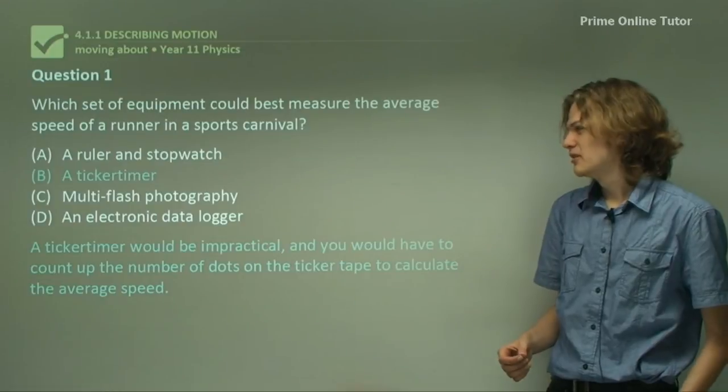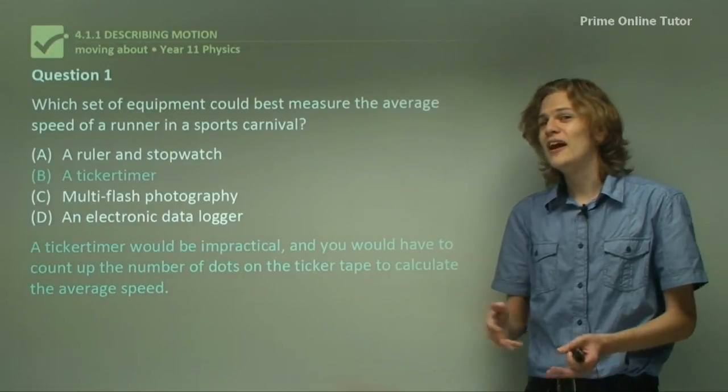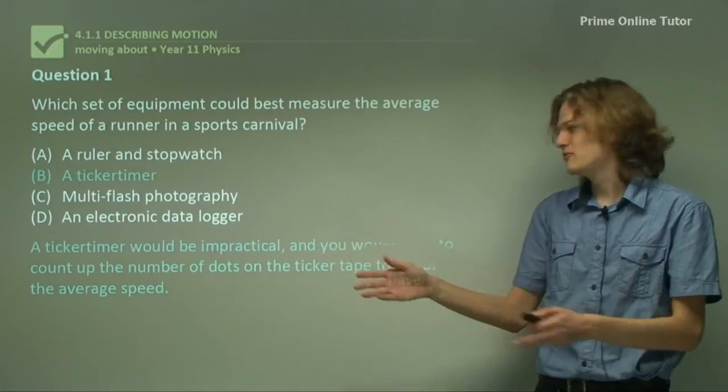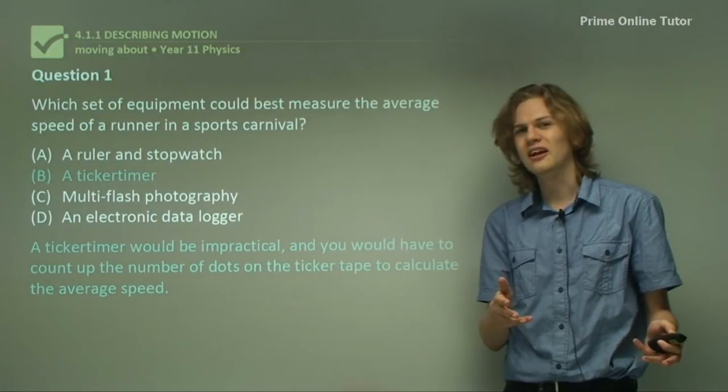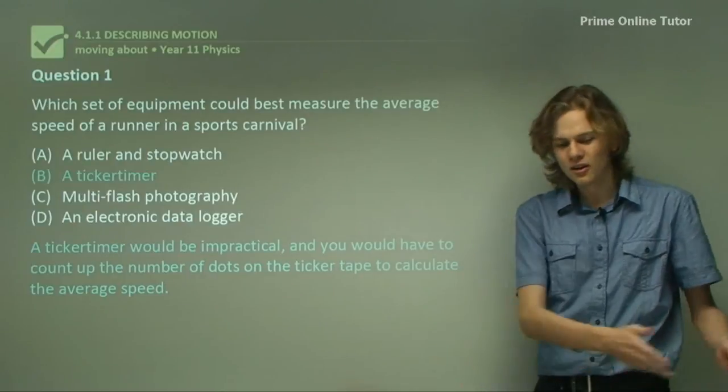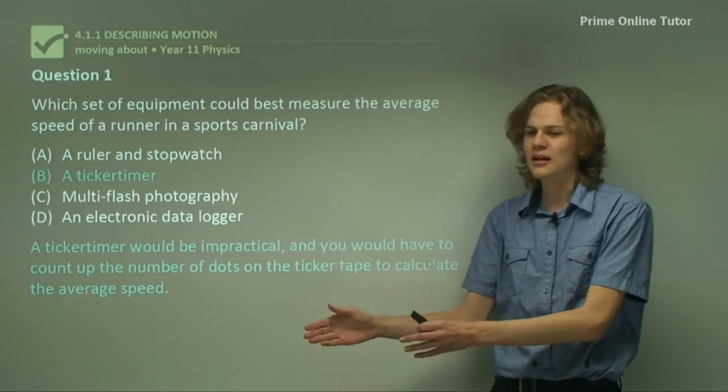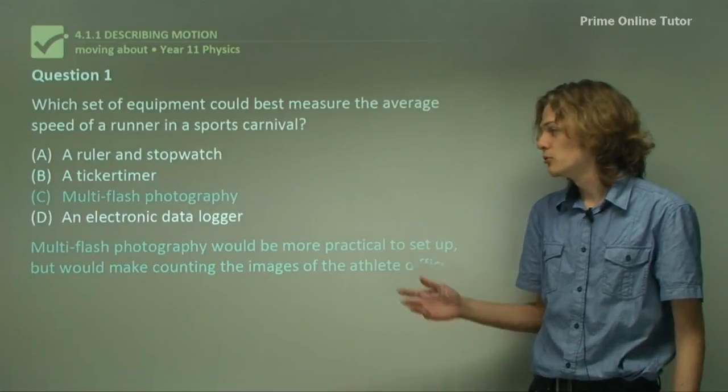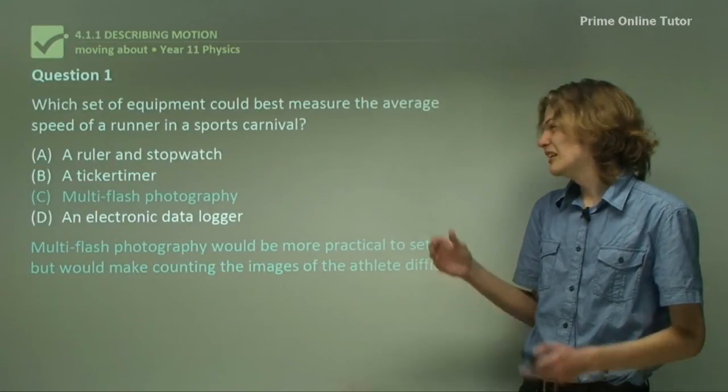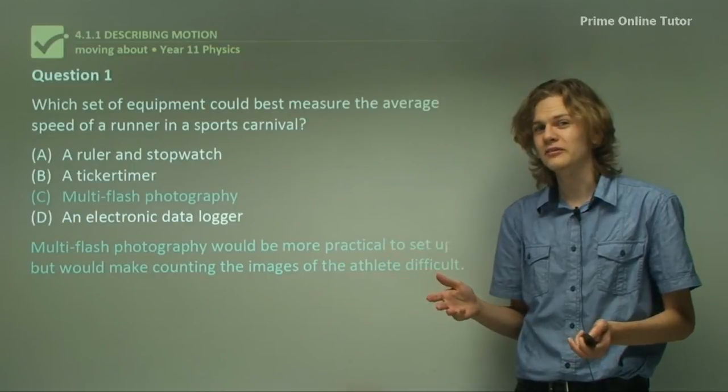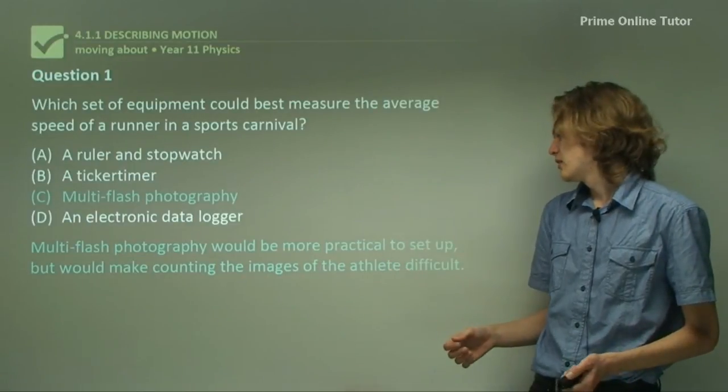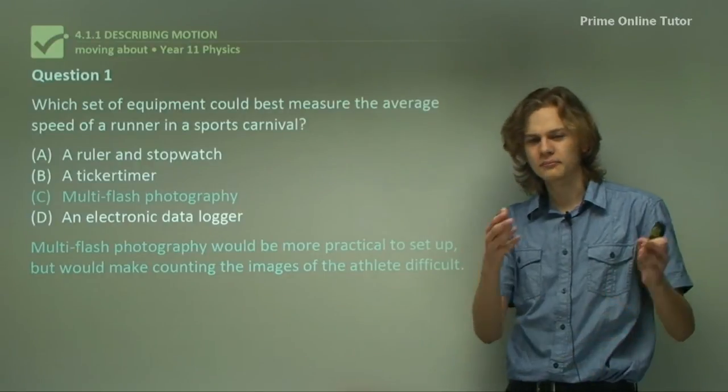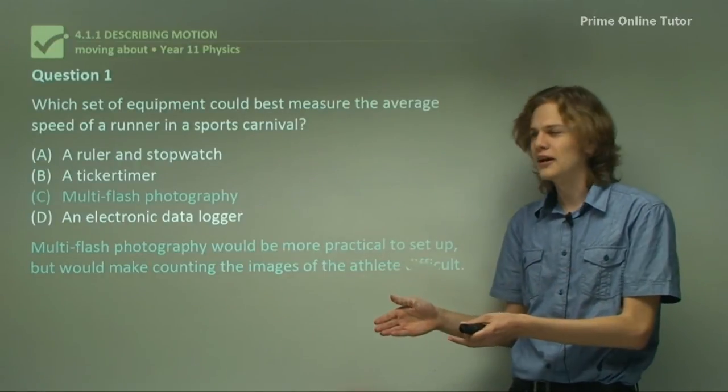A ticker timer? Well, it would be impractical because you'd need a very, very long piece of ticker tape. And you'd have to count the whole number of dots in order to calculate the average speed. You'd have to look at the entire length of the ticker tape and figure out how long it took for it to go through. Multi-flash photography? It would be a little more practical than a ticker timer because you wouldn't need a piece of tape so long. But it would make counting the images of the athlete rather difficult. And you'd have to count how many strobes there were in order to calculate the average speed.